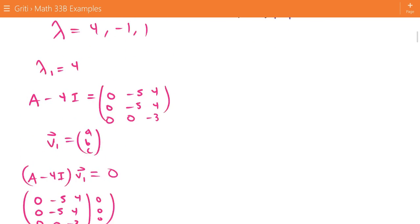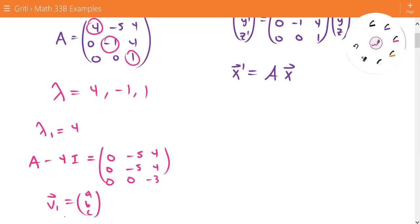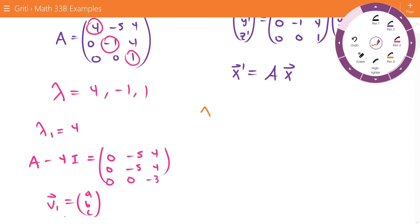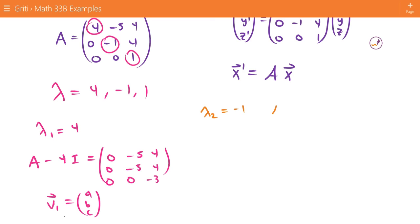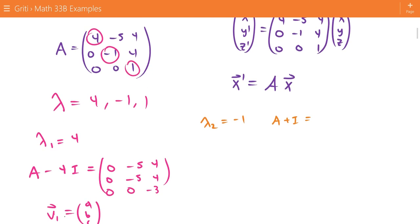So now we go back to our other eigenvalues. We look at lambda 2, which equals negative 1. That means we consider A plus I. A plus I is equal to 5, negative 5, 4, 0, 0, 4, and 0, 0, 2.